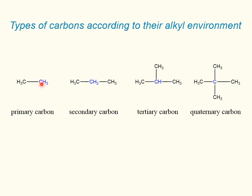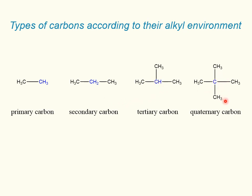If the carbon atom is bonded to only one carbon, it is referred to as a primary carbon. A secondary carbon has two other carbons bonded to it, and so on as shown in the picture.